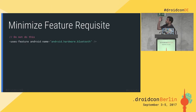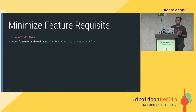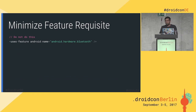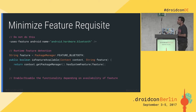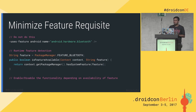The third practice is to minimize feature requests. A certain manifest line that requires specific hardware will filter your app out of the Play Store from devices that don't have that hardware. As a library developer, if I include this in my manifest, during merging it gets added to your app — you lose targeting to other devices. The solution is dynamic checking: use PackageManager to check if the system feature exists. If it does, enable the functionality; if it doesn't, use a fallback or disable it altogether.